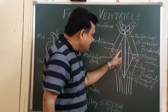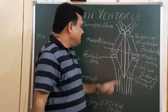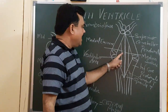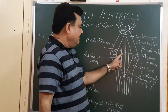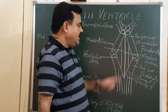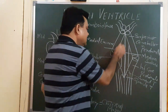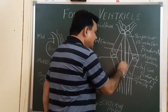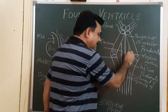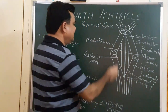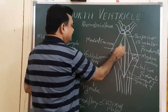The sulcus that separates the lateral and medial parts is known as the sulcus limitans. The medial eminence lies medial to the sulcus limitans.